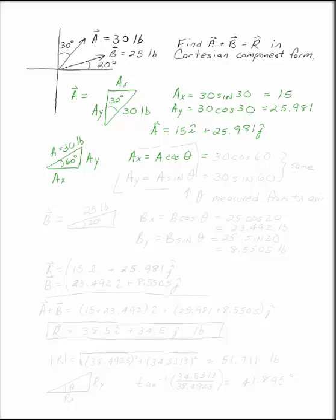or 30 times cosine of 60. And AY would be A sine theta, which would be 30 times sine of 60. This is the same answer. So, whether you draw your triangles, or you simply remember this fact, this fact works only if theta is measured from the positive x axis.